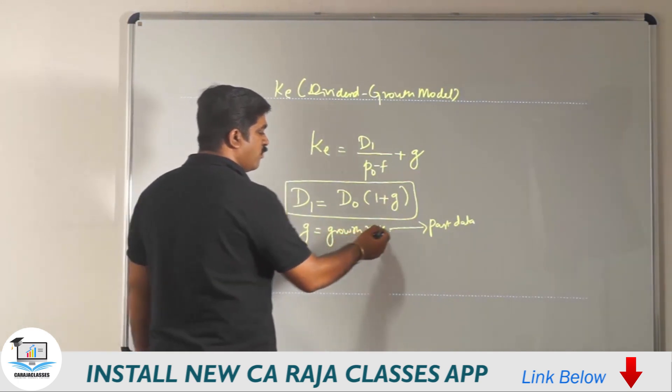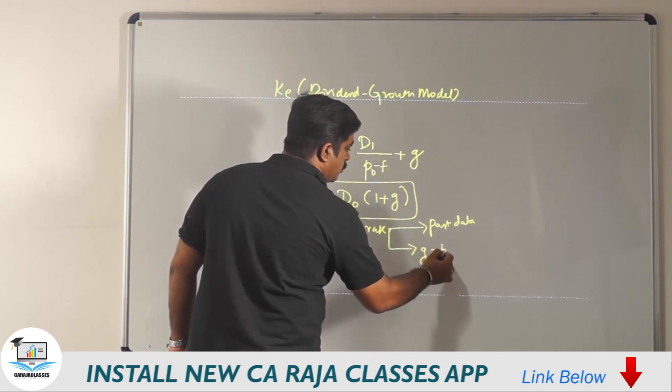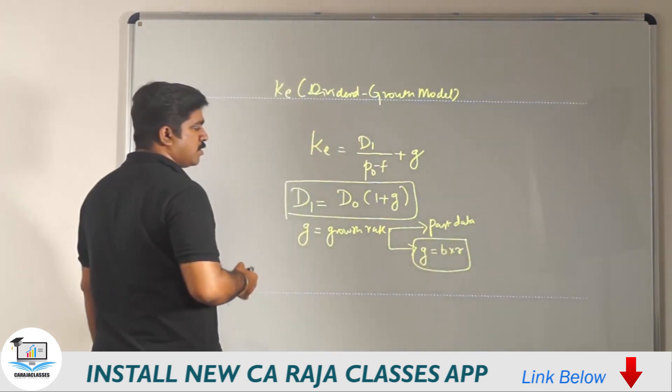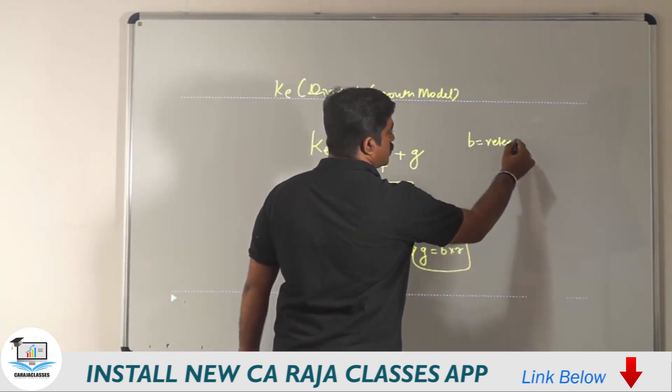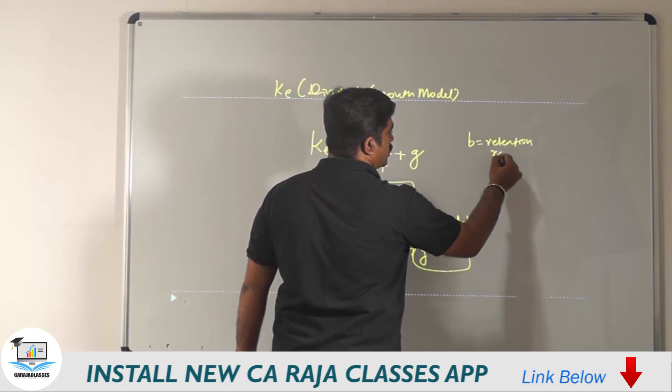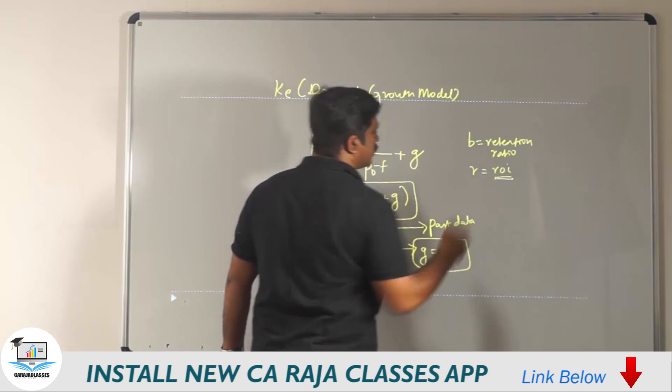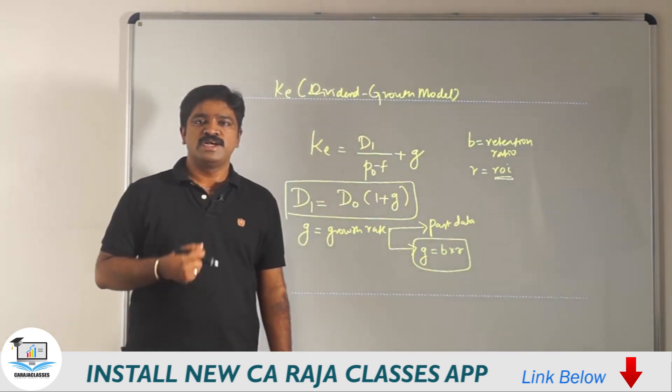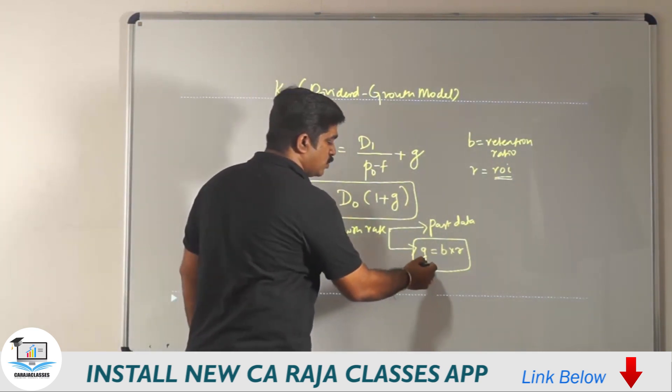Or we can go by formula. We have G equals B multiplied by R. What is B? What is R? B stands for retention ratio, whereas R stands for return on investment, ROI. If retention ratio, that is retained profit, is multiplied with return on investment, then automatically we get the growth rate.